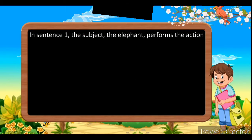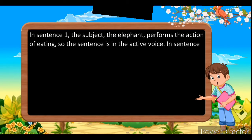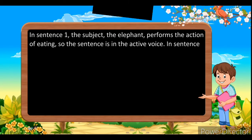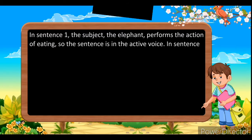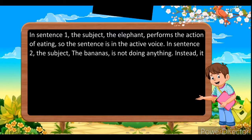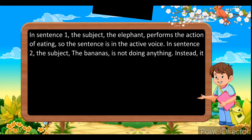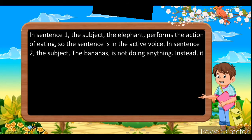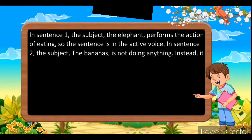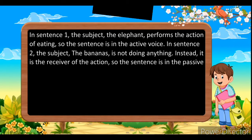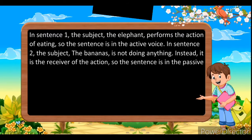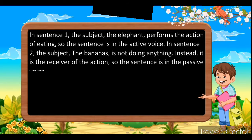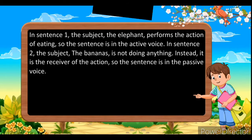In the first sentence, the subject — the elephant — performs the action of eating, so the sentence is in the active voice. In the second sentence, the subject — the bananas — is not doing anything. Instead, it is the receiver of the action, so the sentence is in the passive voice.